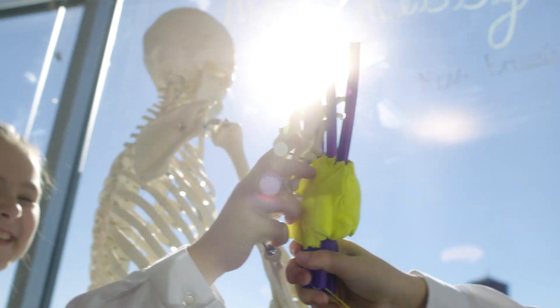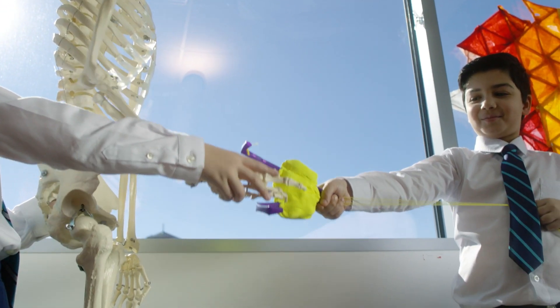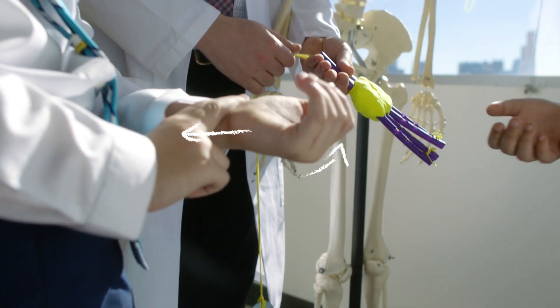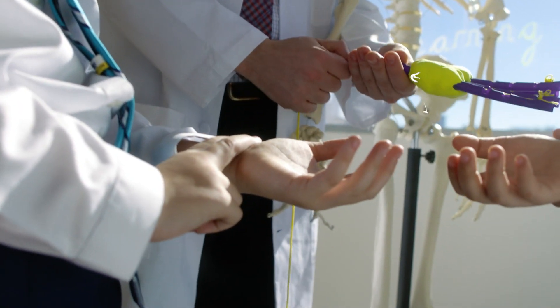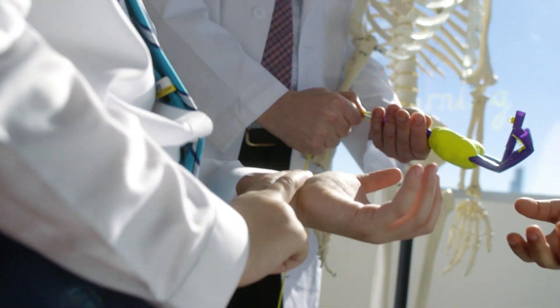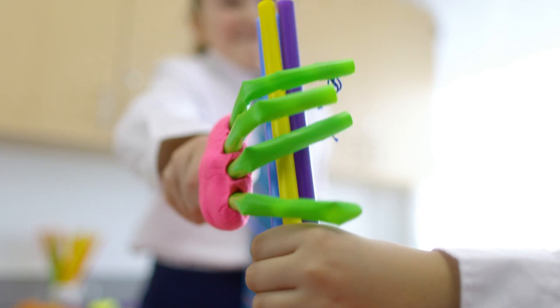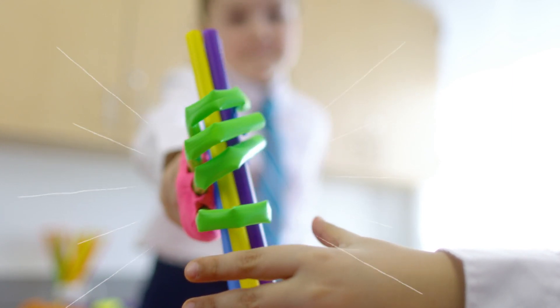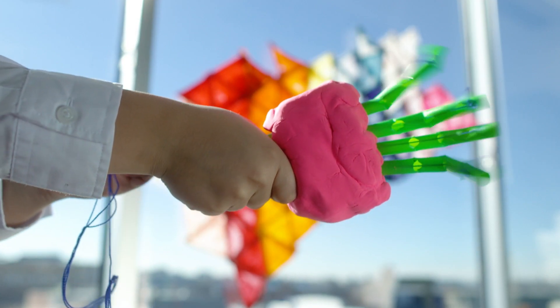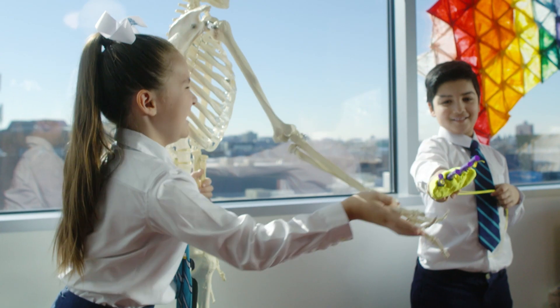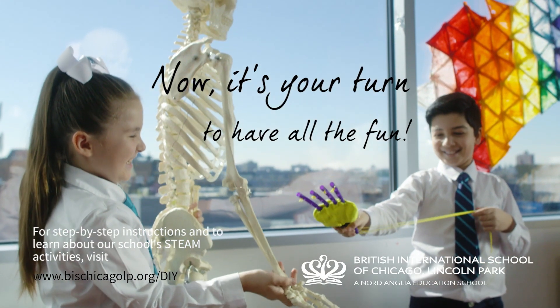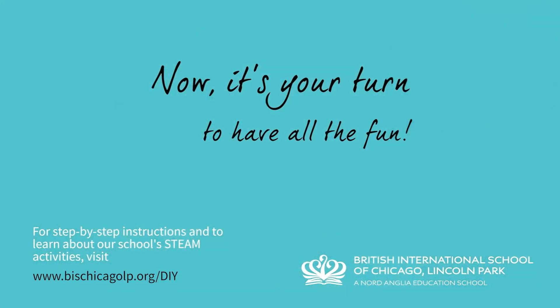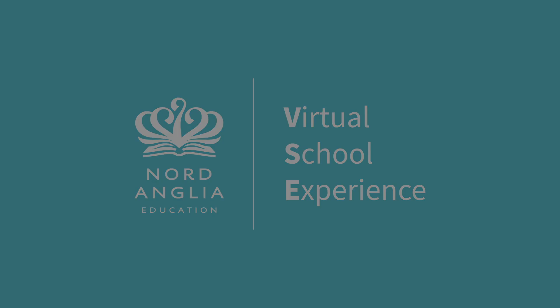Our skeleton protects us, gives us support and helps us to move. A human skeleton is moved when muscles contract and pull on tendons, which are attached to bones. Engineers use this knowledge to make prosthetic limbs and robots.